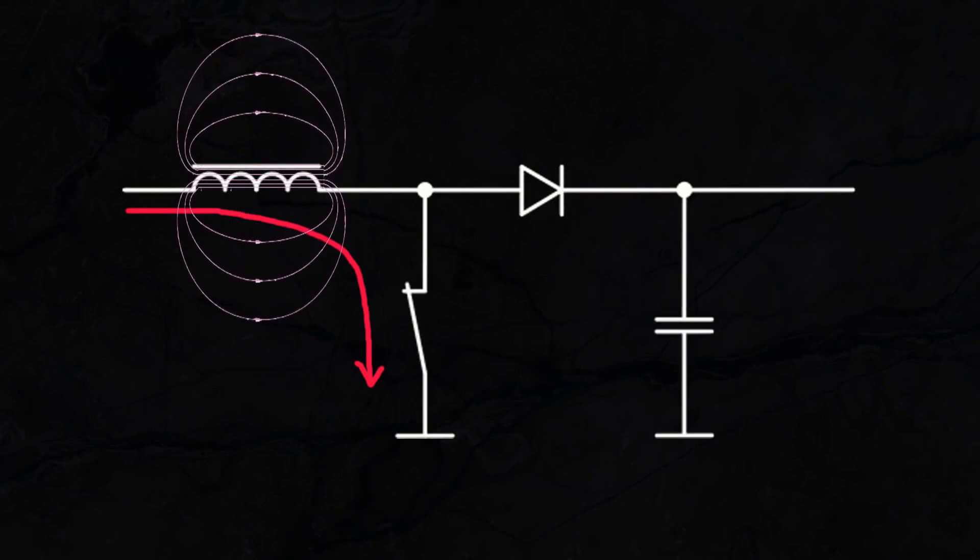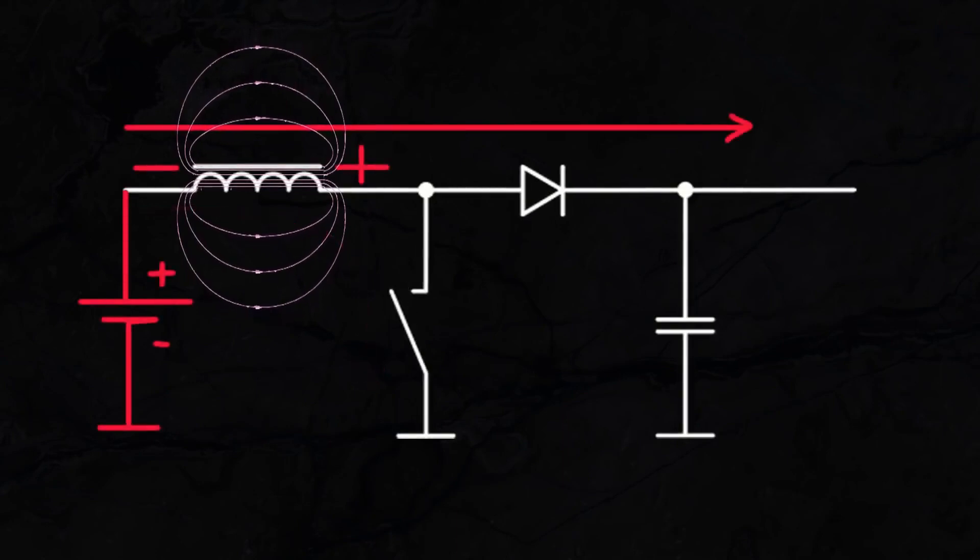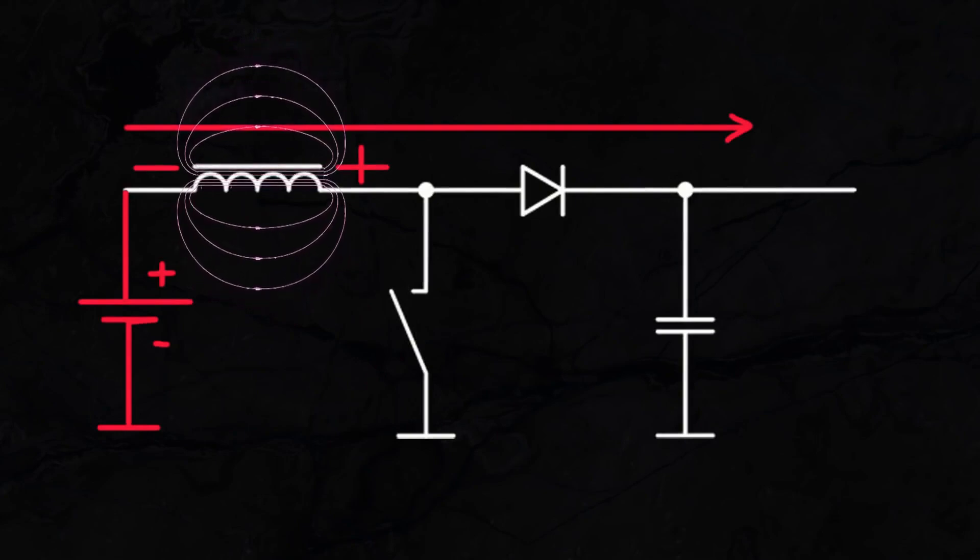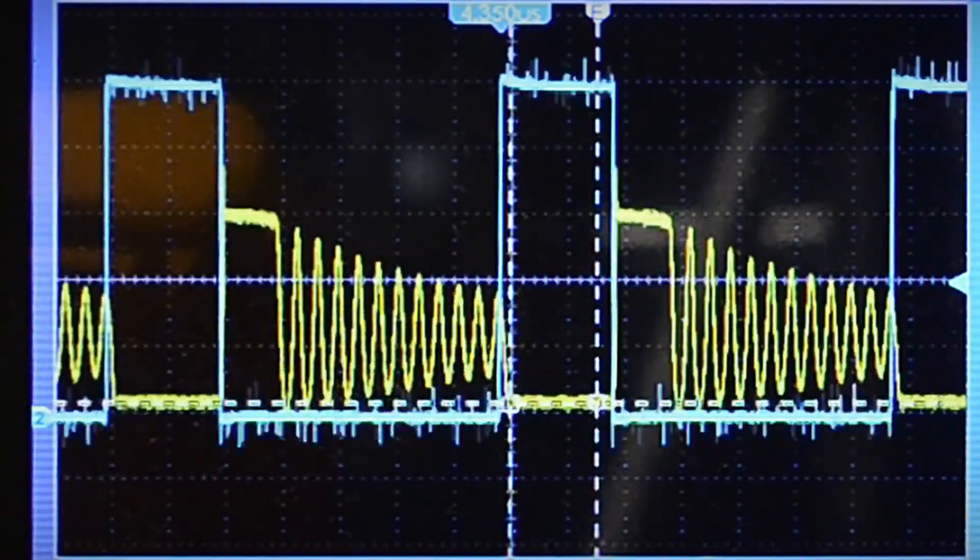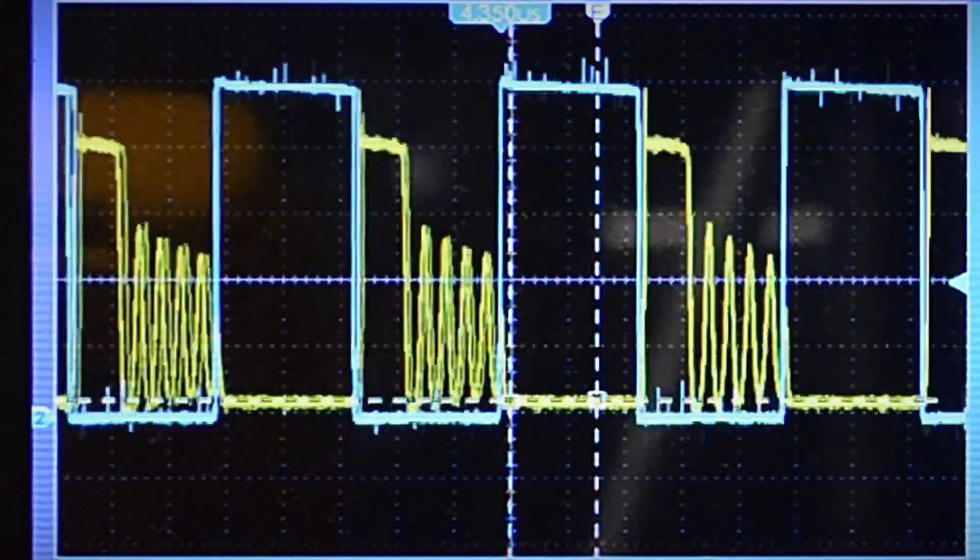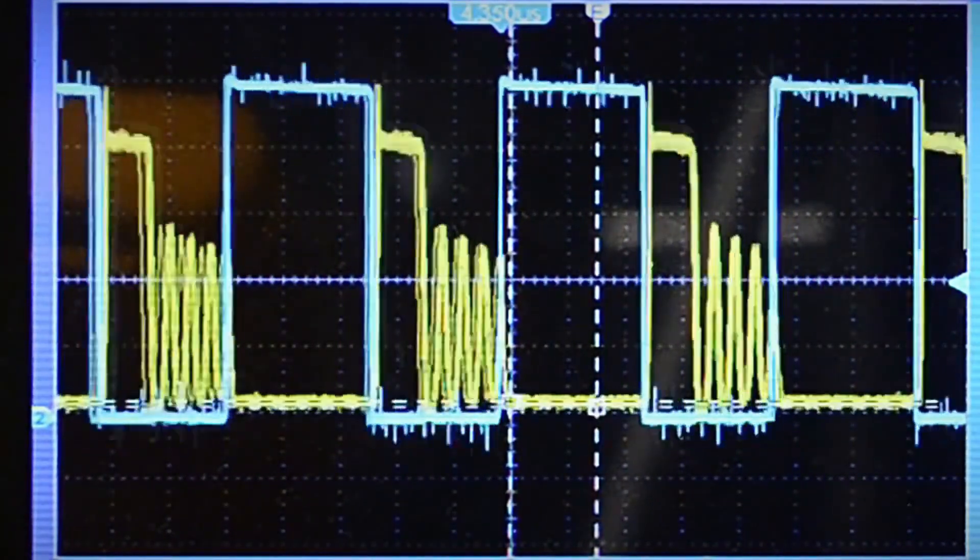Now we open the switch. The field created by the coil induces voltage in it. And then it's like two batteries connected in series. The power supply voltage plus the voltage induced in the coil goes through the diode to the capacitor and then to the load. This is the second phase. The main feature is that the spike of induced voltage in the coil is several times higher than the power supply voltage. This is how the voltage is increased.